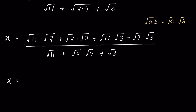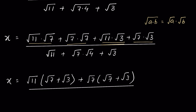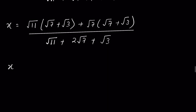Now in the first two numerator terms we take √11 as common: √11(√7 + √3). In the next two terms we take √7 as common: √7(√7 + √3). The denominator is √11 + √7·√4 + √3. Since √4 = 2, we write this as 2√7, so the denominator becomes √11 + 2√7 + √3.